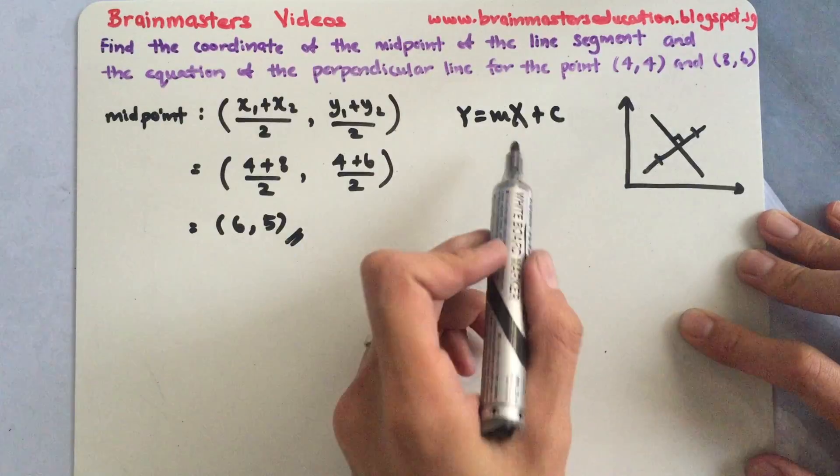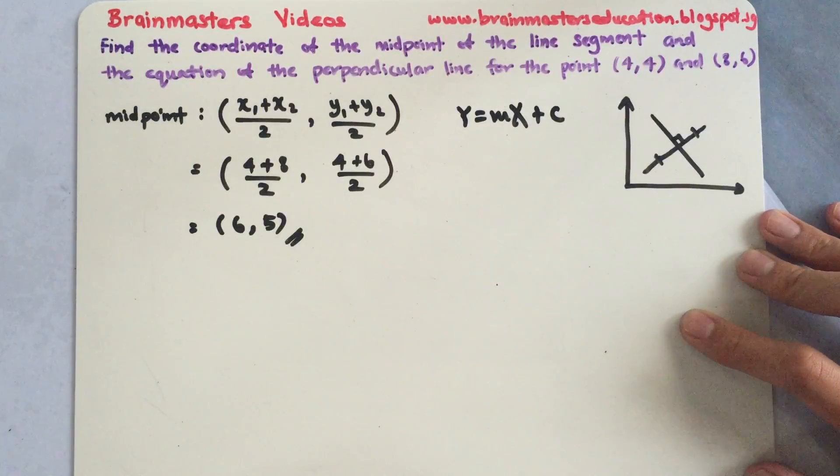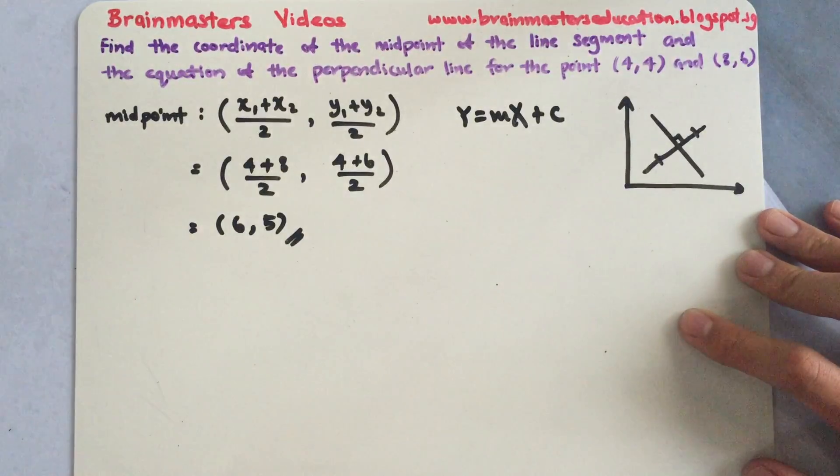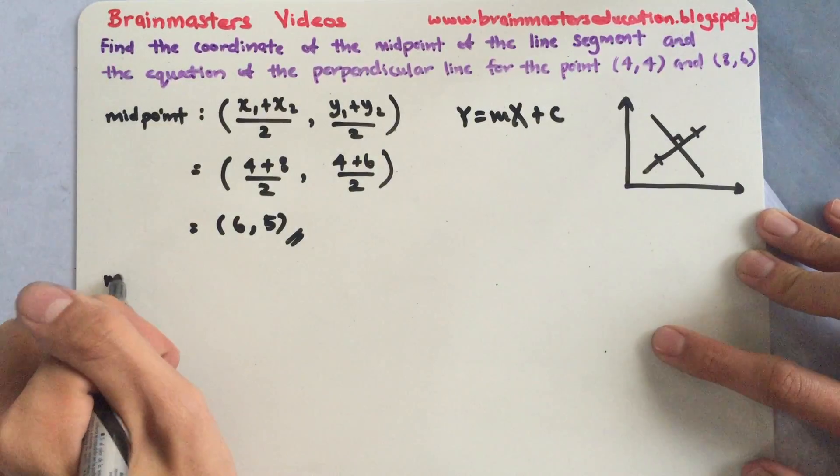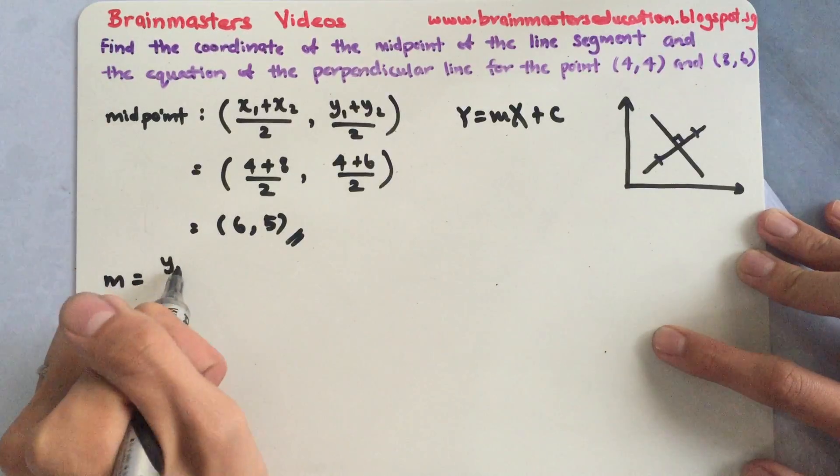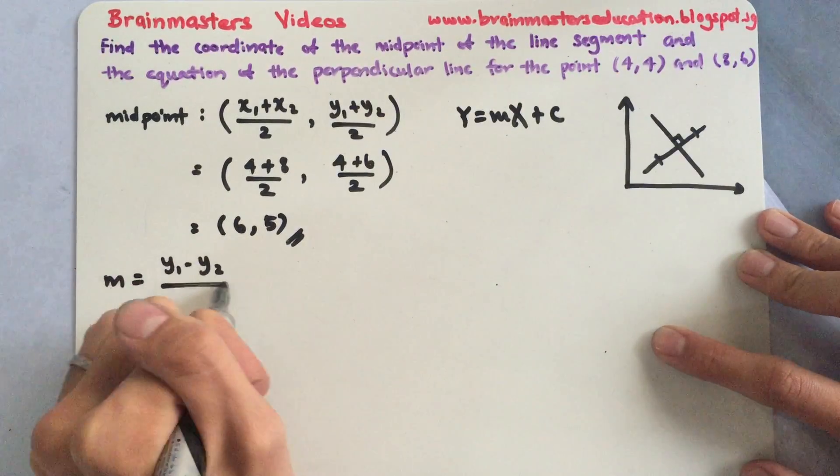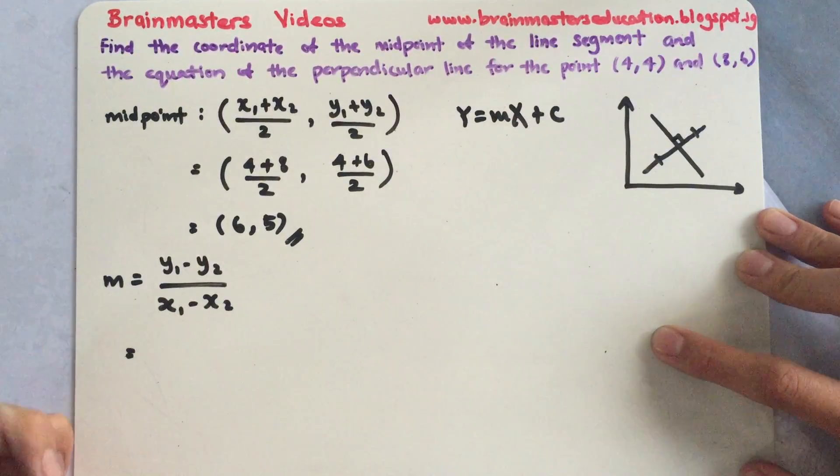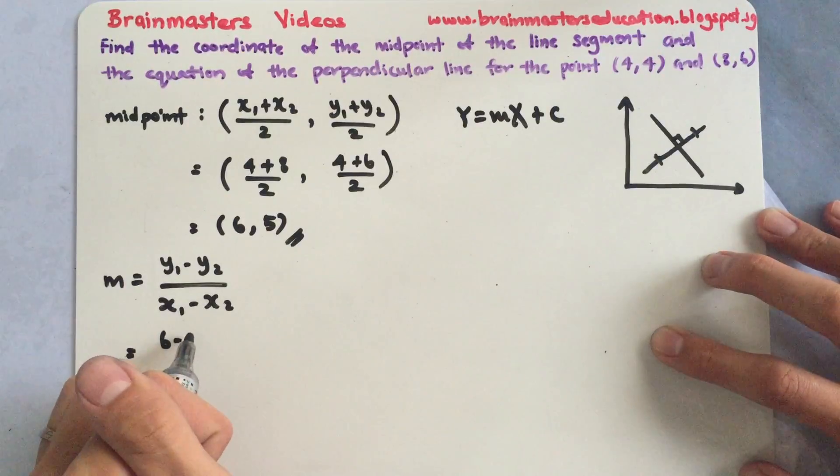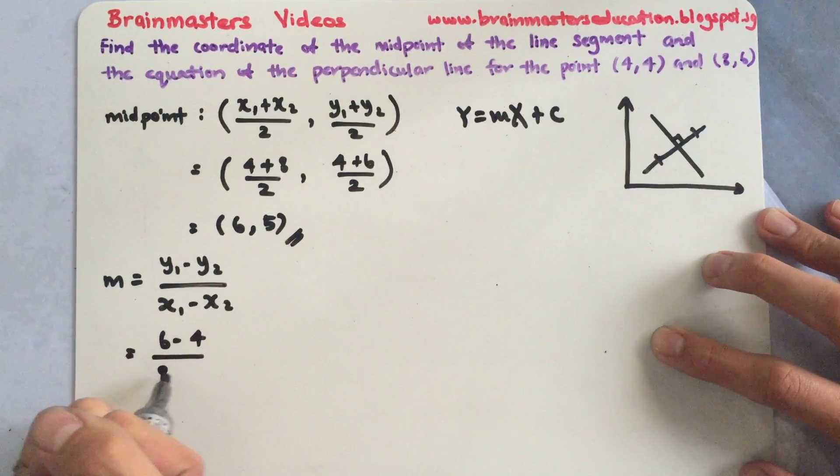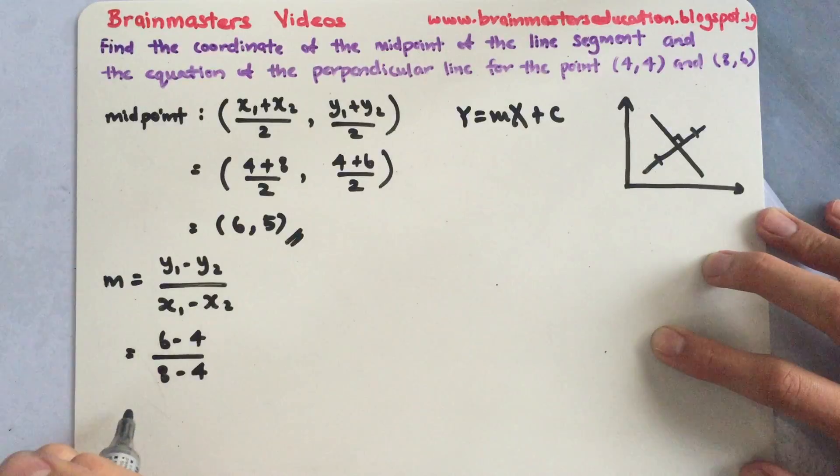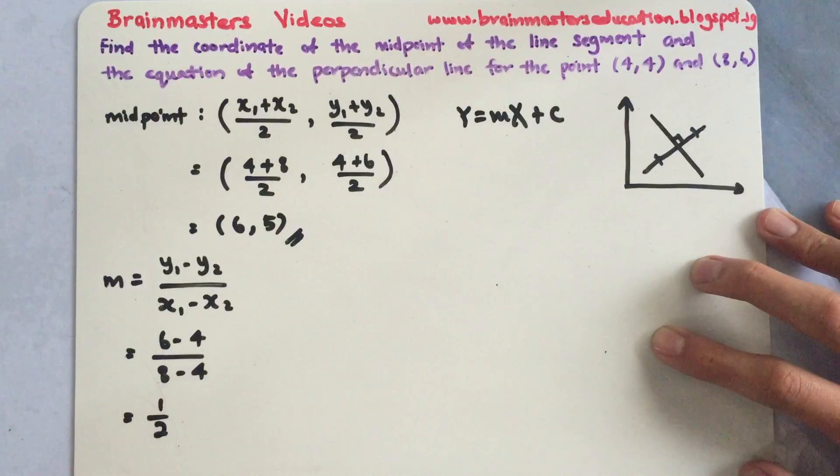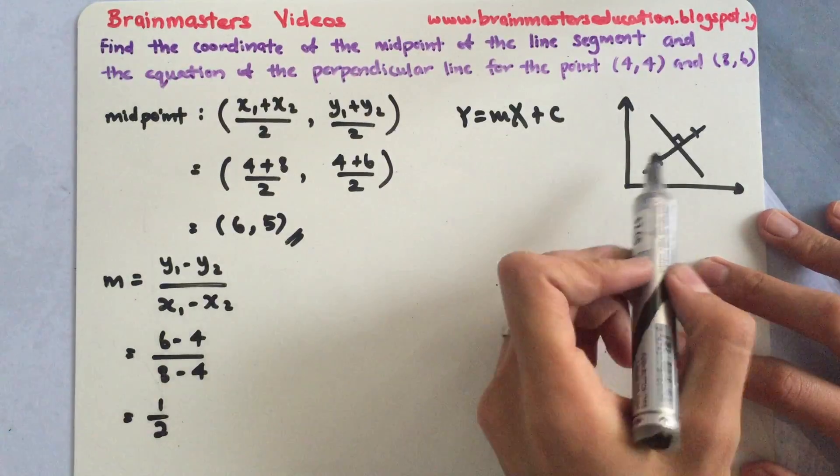Yeah, so I need to find my gradient first. That's how it always goes. Gradient of what? Gradient of this original line first before I go on to find my perpendicular. So gradient m is y1 minus y2 over x1 minus x2. So I will use 6 minus 4 over 8 minus 4. This will give me my gradient of 2 over 4, which is reduced to 1/2.